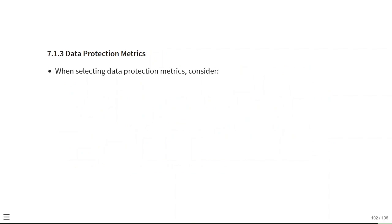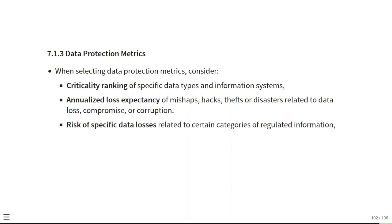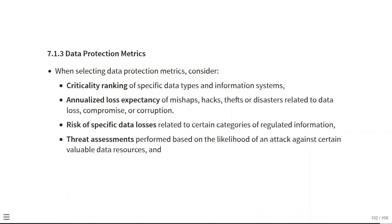Security awareness metrics should consider: risk assessment findings providing qualitative data fed back to business units to increase awareness of accountability; risk events and profiles identifying unmanaged exposures; formal feedback surveys and interviews identifying the level of security awareness; and incident post-mortems, lessons learned and victim interviews providing information on gaps in security awareness. When selecting data protection metrics, consider: criticality ranking of specific data types and information systems; annualized loss expectancy of mishaps, hacks, thefts or disasters; risk of specific data losses for categories of regulated information; threat assessments based on likelihood of attack against valuable data resources; and vulnerability assessments of specific parts of the business process.